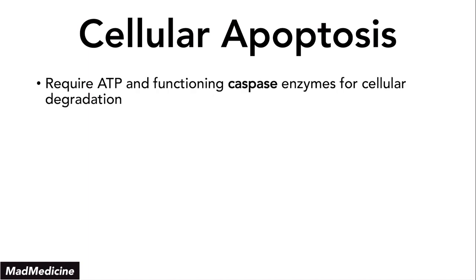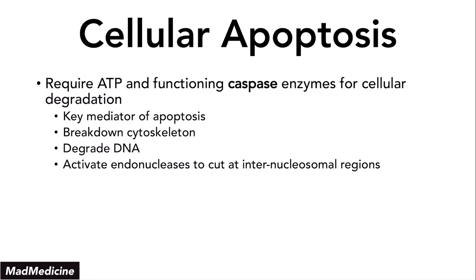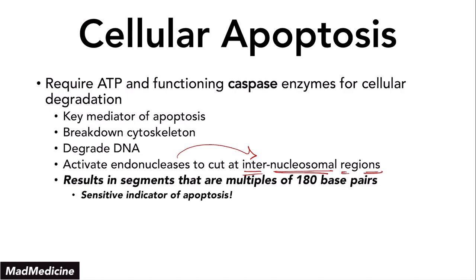Apoptosis requires functioning ATP and caspase enzymes. You need these enzymes to break down the cytoskeleton — they are key mediators of apoptosis and also play a role in degrading DNA. Degrading DNA is a very active process requiring ATP, accomplished by activating proteins called endonucleases. These endonucleases cut the DNA at the internucleosomal regions, producing segments that are multiples of 180 base pairs. This is a very sensitive and high-yield indicator of apoptosis.